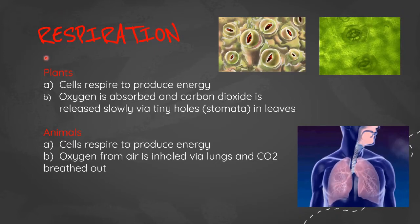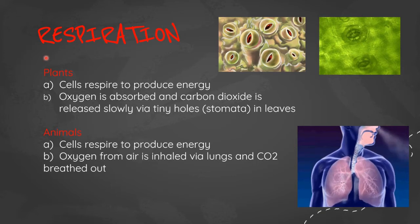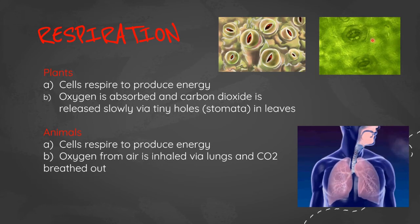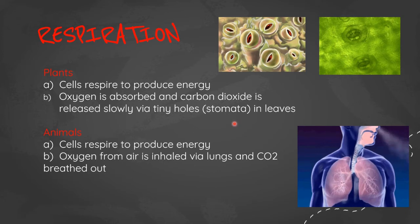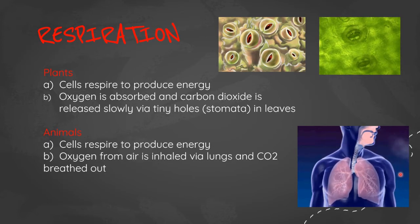Respiration is quite similar in plants and animals. They both have cells that respire to produce energy. In plants, oxygen is absorbed and carbon dioxide is released slowly via tiny holes or stomata in the leaves, as you can see here. In animals, oxygen from the air is inhaled via the lungs and carbon dioxide is exhaled.